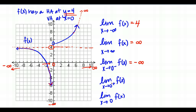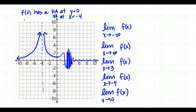As I approach 0 from the right side, my function gets closer and closer to a Y value of 5. It doesn't matter that there is a hole right there; it just matters that we get closer and closer to 5. Now the limit as X approaches 0: from the left I get close to negative infinity, from the right I get close to 5 — these are not equal, so this limit does not exist. The one-sided limit was negative infinity, which technically did not exist either, but we classify it as going towards negative infinity.